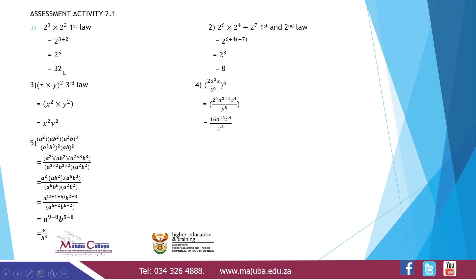So that gives us 3 plus 2, which is 2 to the power 5, which equals 32. For number 2, we have 2 to the power 6 times 2 to the power 4, divided by 2 to the power 7. Applying the first and second laws: same base, multiplication means addition — 6 plus 4 — then division means subtraction — minus 7 — giving 2 to the power 3, which equals 8.